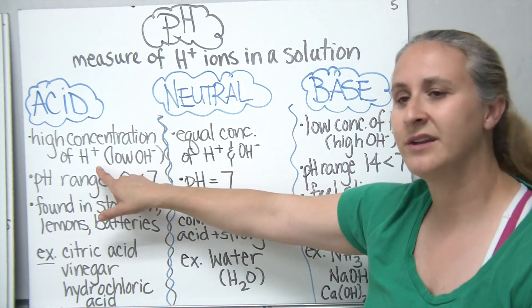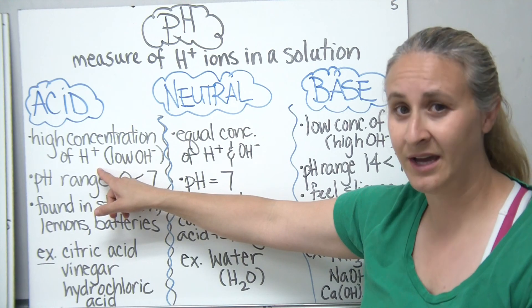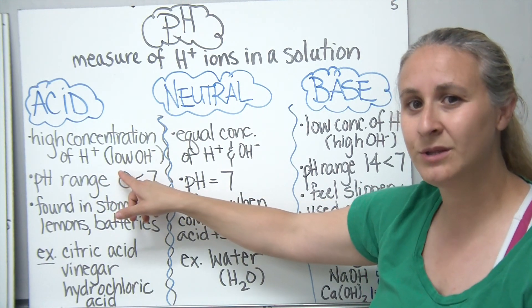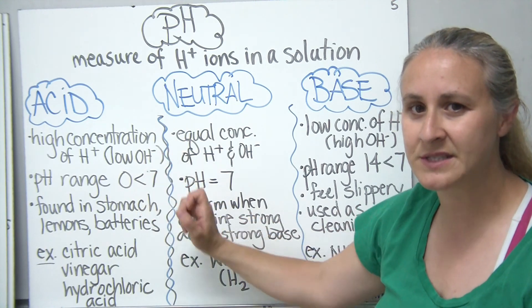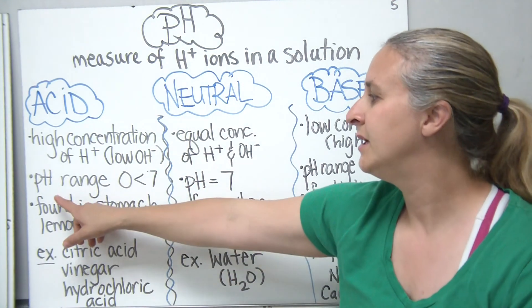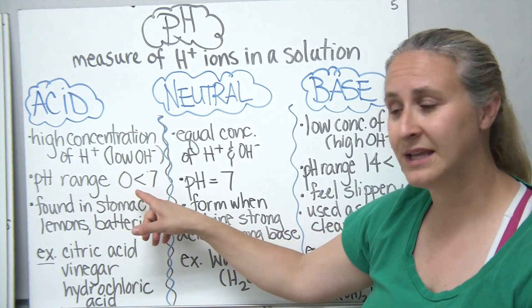So our true definition of an acid is something that has a high concentration of hydrogen ions, or in some cases we may say have a low concentration of something called OH minus ions, and you'll see a little bit more about that in a minute.